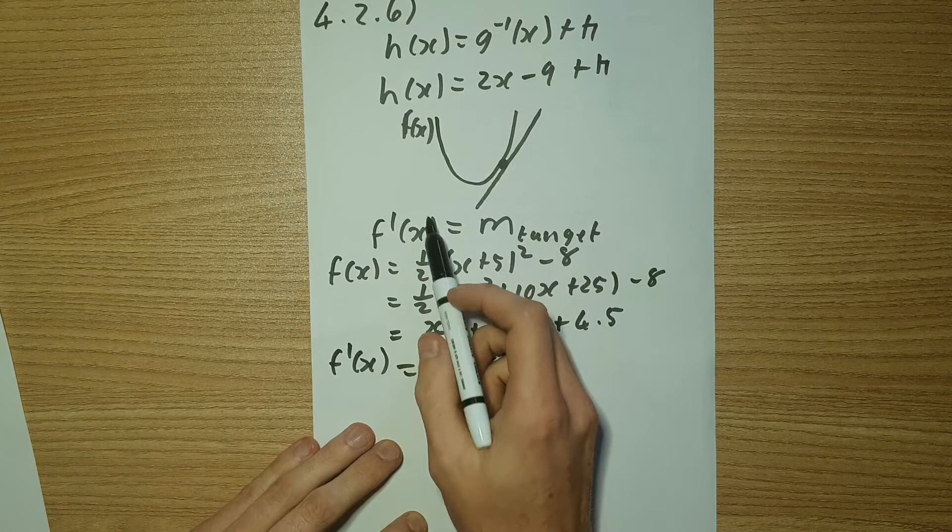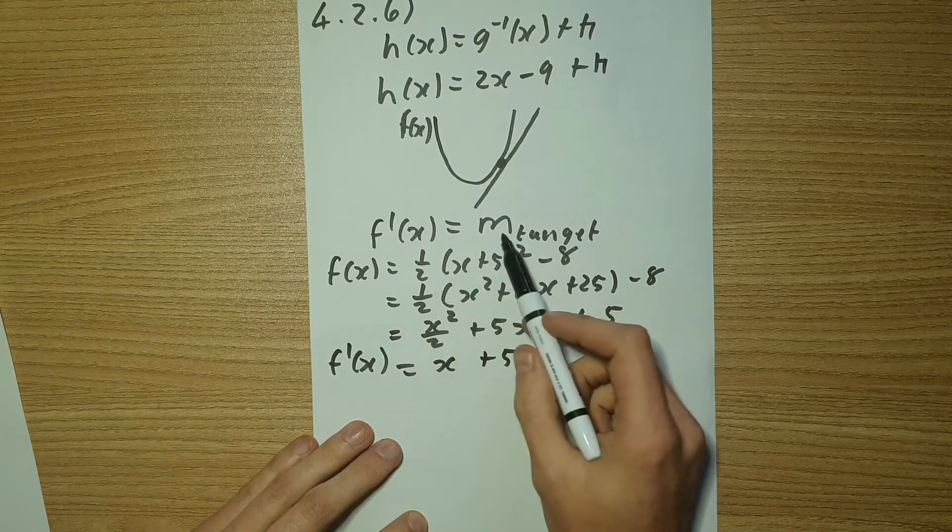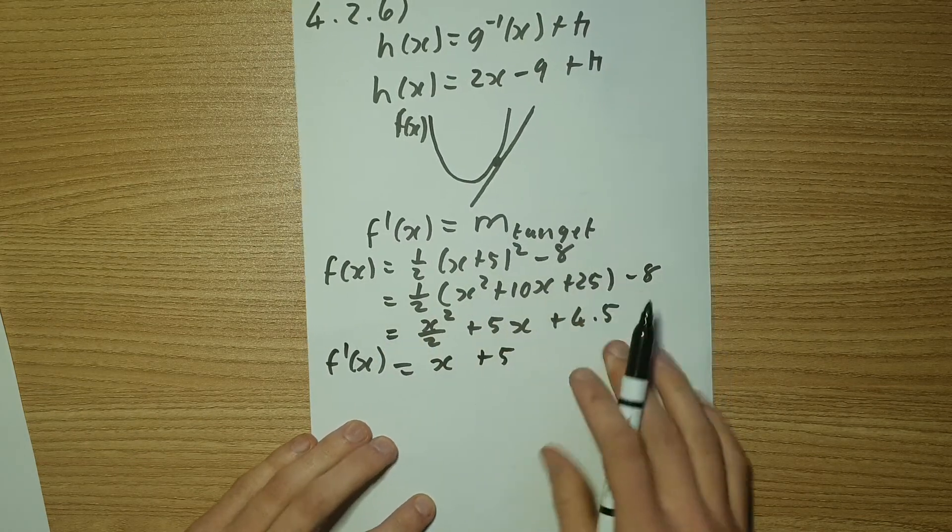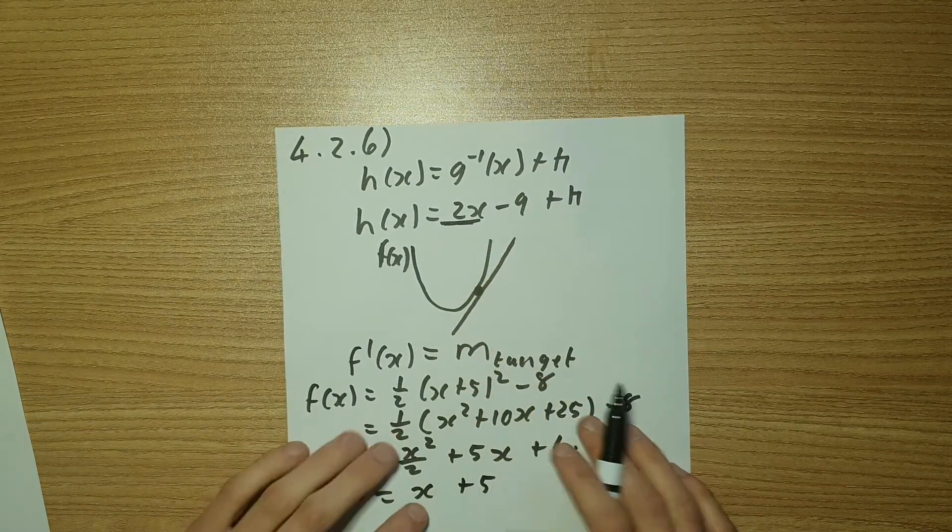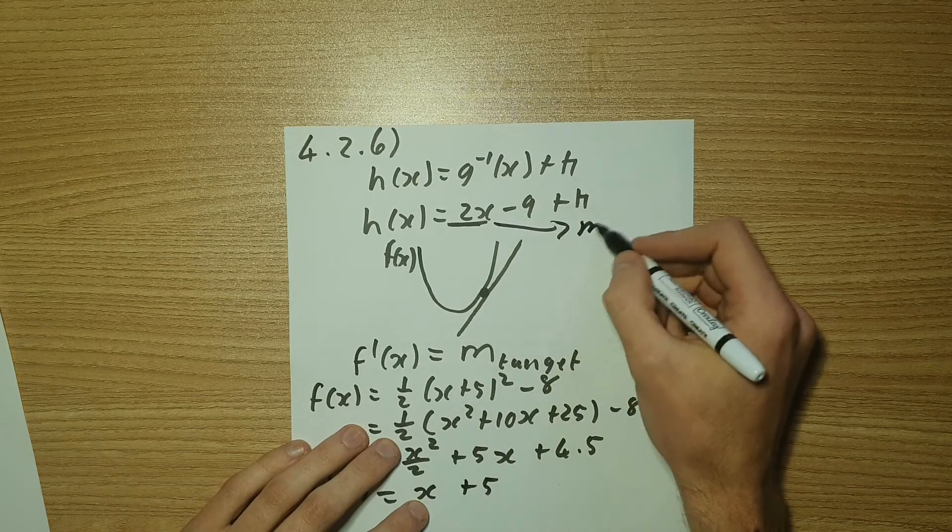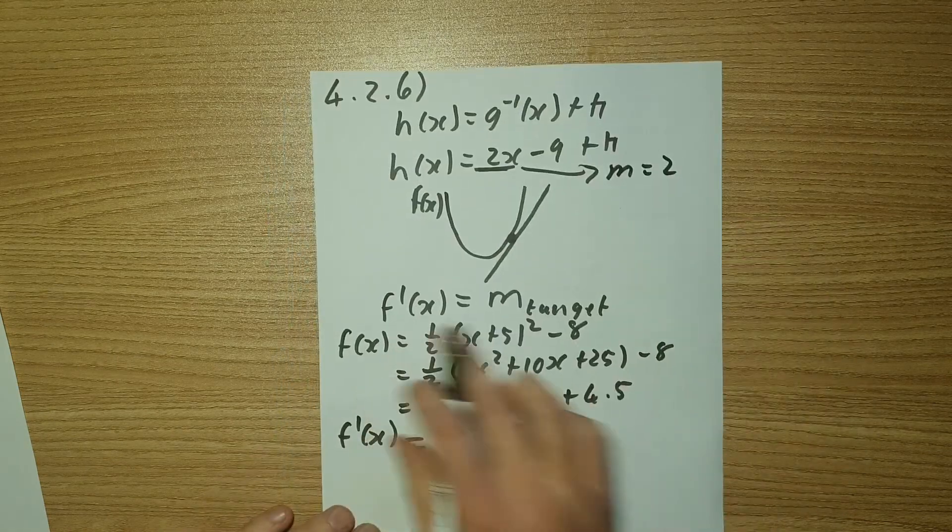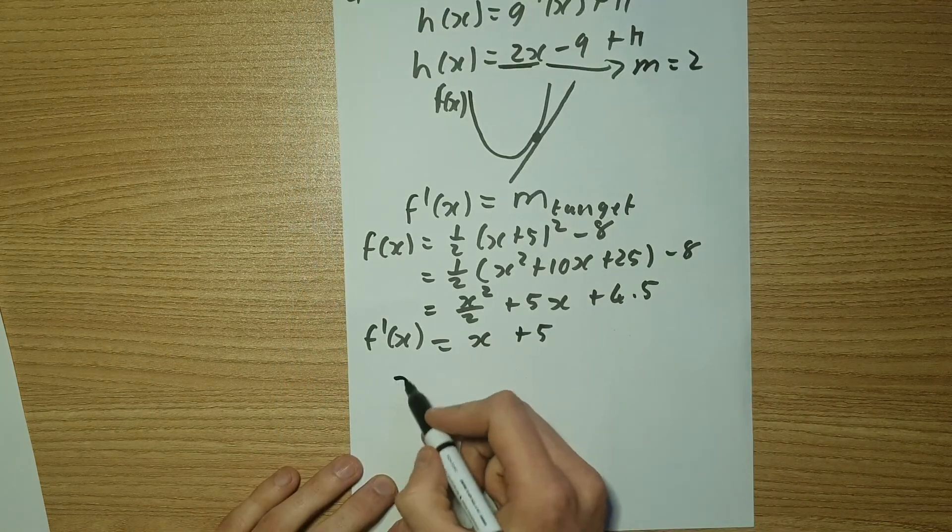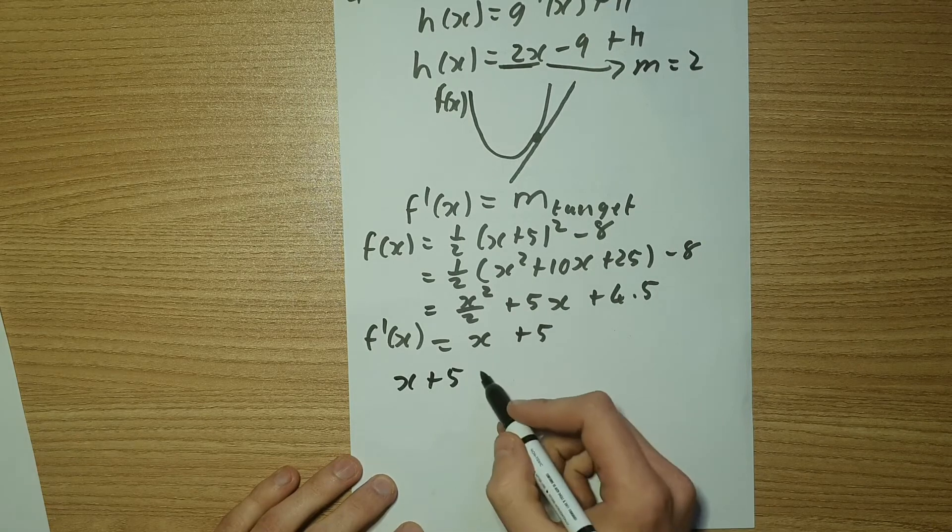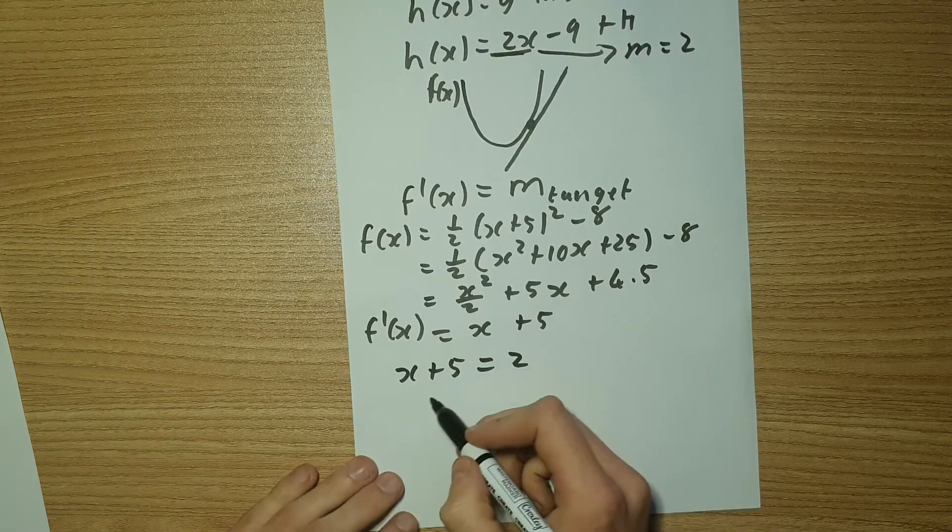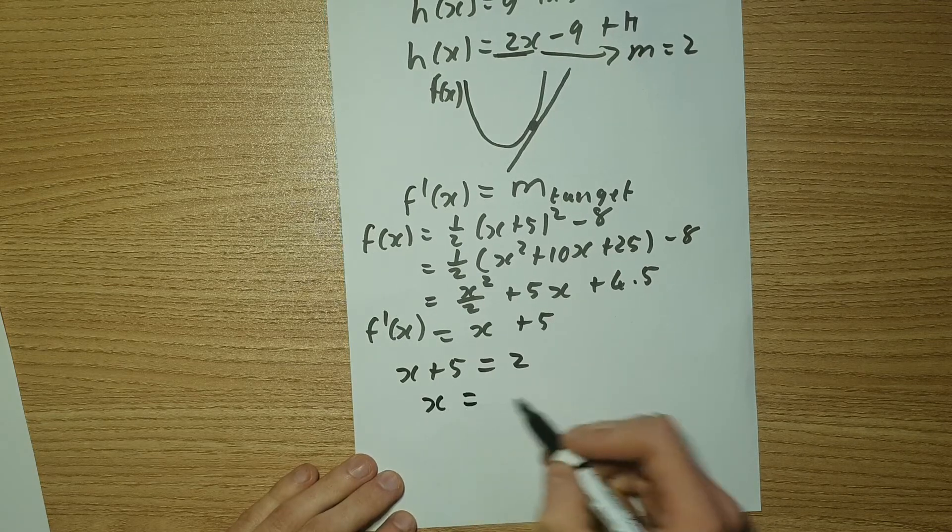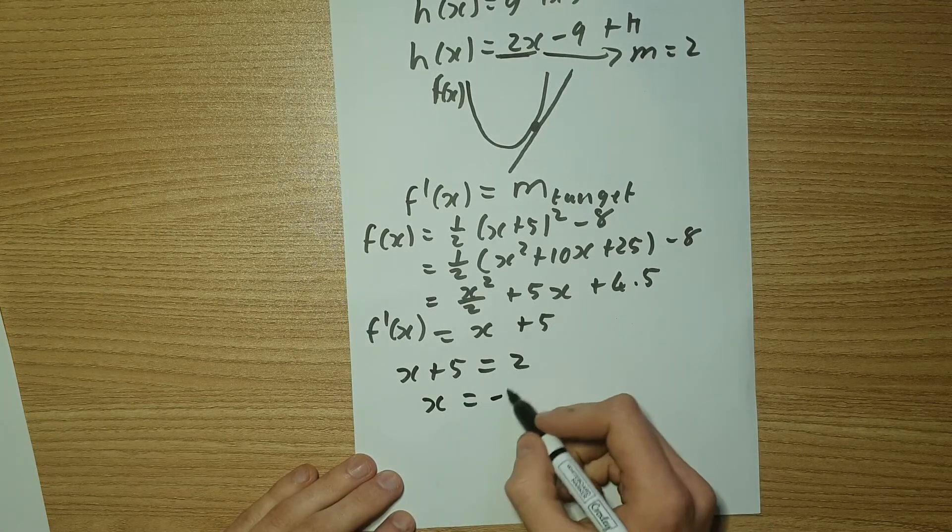Now we said that the derivative of X equals the gradient of my tangent line. So note that the gradient of my tangent line is two. So M equals two. So now I can set these two equal to each other. So I'm going to have X plus five is equal to two. So therefore I'm going to have X equal to two minus five. That's negative three.